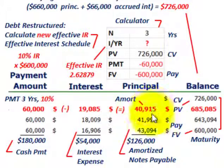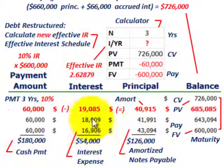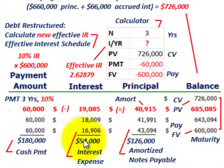We started out with $726,000 and amortize it down to $600,000, which is the maturity value — what we're going to have to pay Bank B at the end of the third year. We would have amortized it down by that amount each year for a total of $126,000. The note is amortized from $726,000 down to $600,000, a difference of $126,000. The actual interest expense on their income statement would be $54,000 total, and the actual cash payment is $180,000.